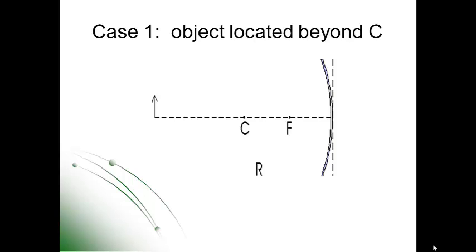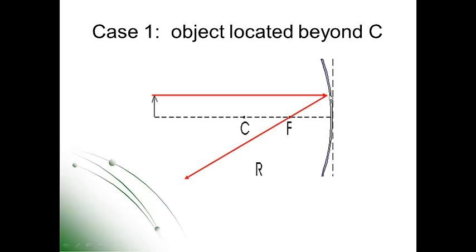Let's start with case number one where the object is located beyond the center of curvature. This arrow is serving as our object — it doesn't have to be exactly there, as long as it's anywhere to the left of point C. To start out, we're going to draw ray one, which connects the top of our object, travels parallel to the axis, hits the mirror, and when it reflects, it reflects through the focal point.